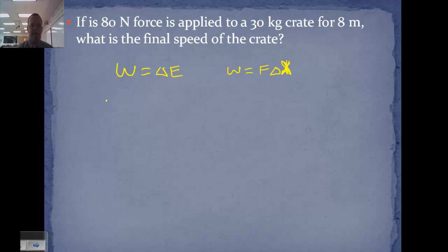So we have a force of 80 newtons, a mass of 30 kilograms, a displacement of 8 meters, an initial velocity of zero, and we're looking for the final velocity. We'll start with work equals force times displacement, so 80 times 8, which is 640 joules.